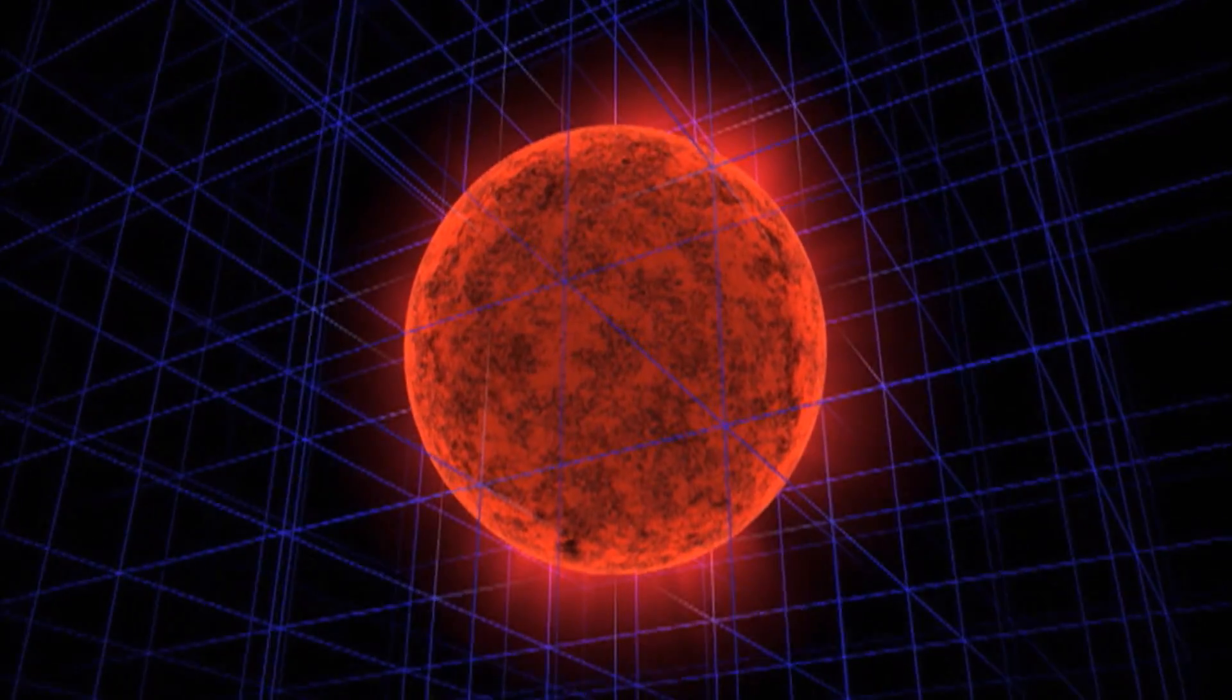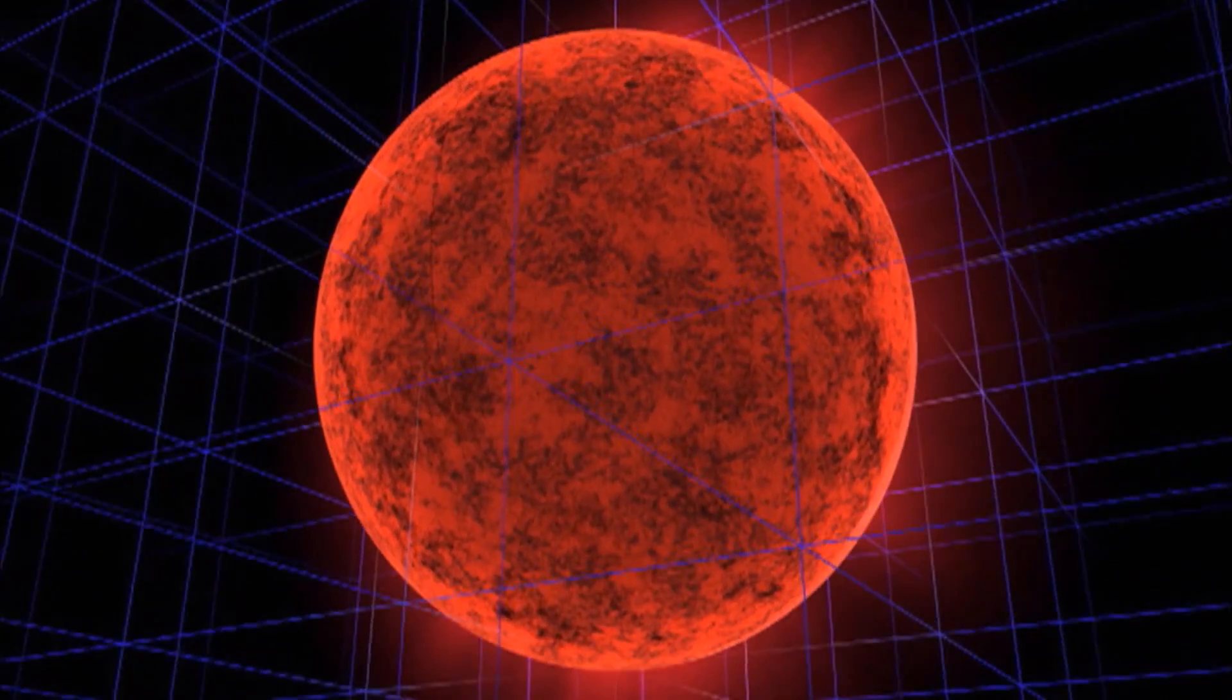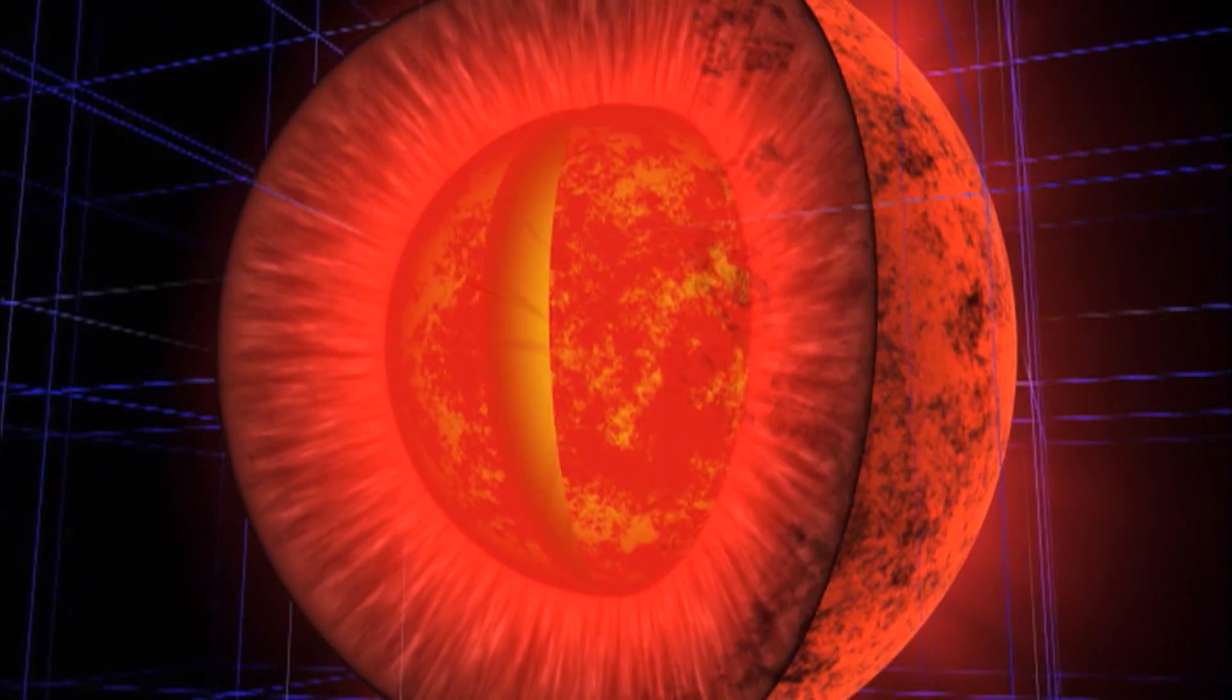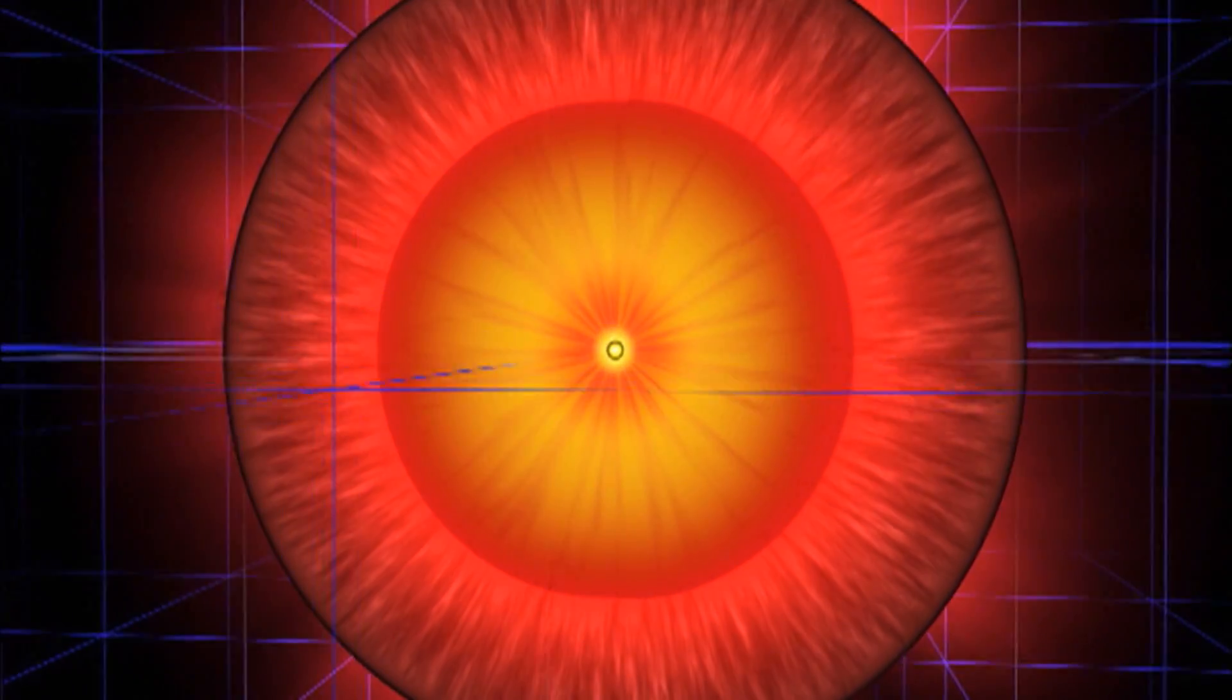Like hot air in a balloon, heat and light from these nuclear fires creates an outward pressure that prevents the star's massive outer layers from collapsing inward.